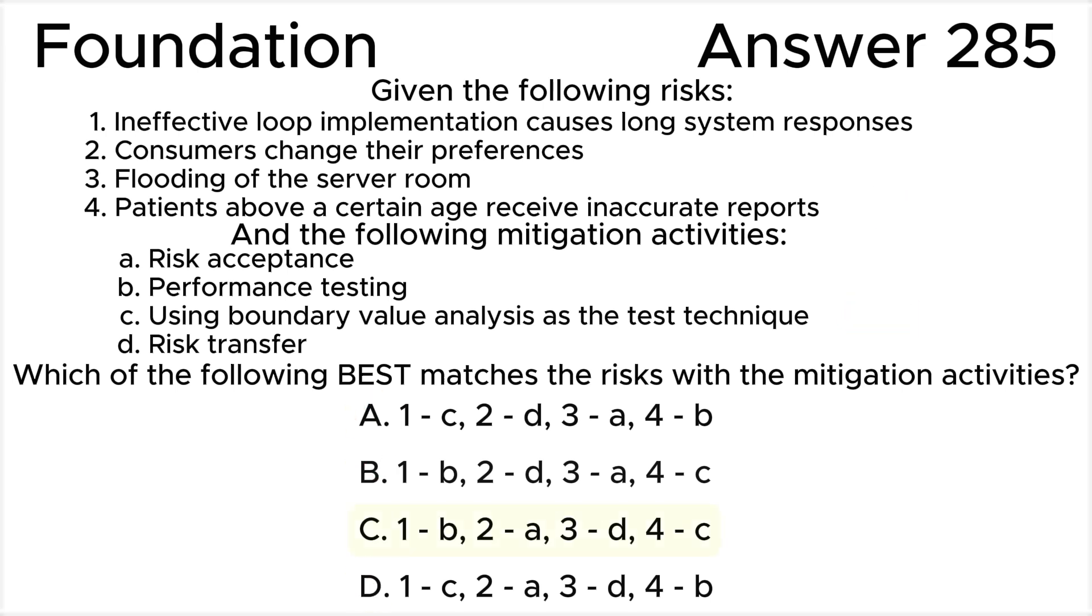In summary, all of the above leads us to the correct answer C: 1 is B, 2 is A, 3 is D, 4 is C, as combinations of risks and mitigations.